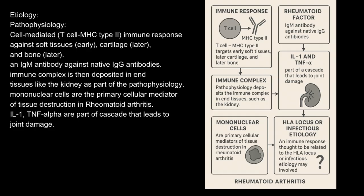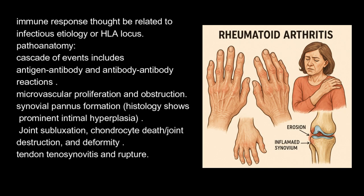Mononuclear cells are the primary cellular mediator of tissue destruction in rheumatoid arthritis. IL-1 and TNF-alpha are part of the cascade that leads to joint damage. The immune response is thought to be related to an infectious etiology or HLA locus.